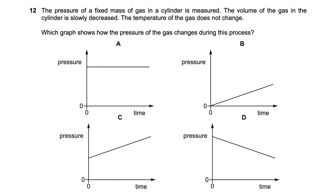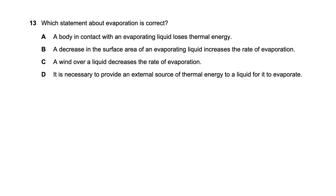Question twelve: the pressure of a fixed mass of gas in a cylinder is measured and then the volume is decreased at constant temperature. We eliminate by reasoning: pressure cannot stay constant or decrease when volume decreases, so options A and D are wrong. Option B shows pressure going to zero, which is impossible for gas already at pressure. So option C — pressure increases from its initial value — is the right answer.